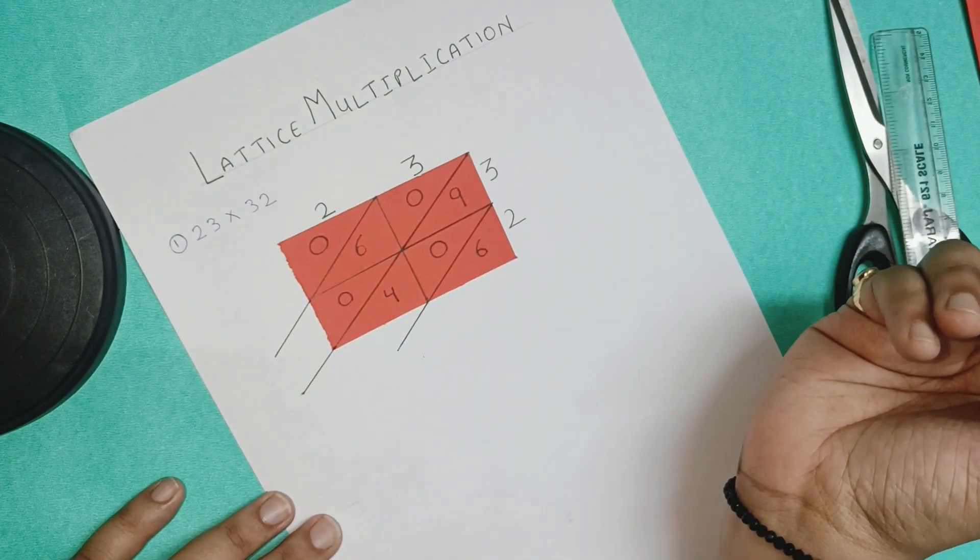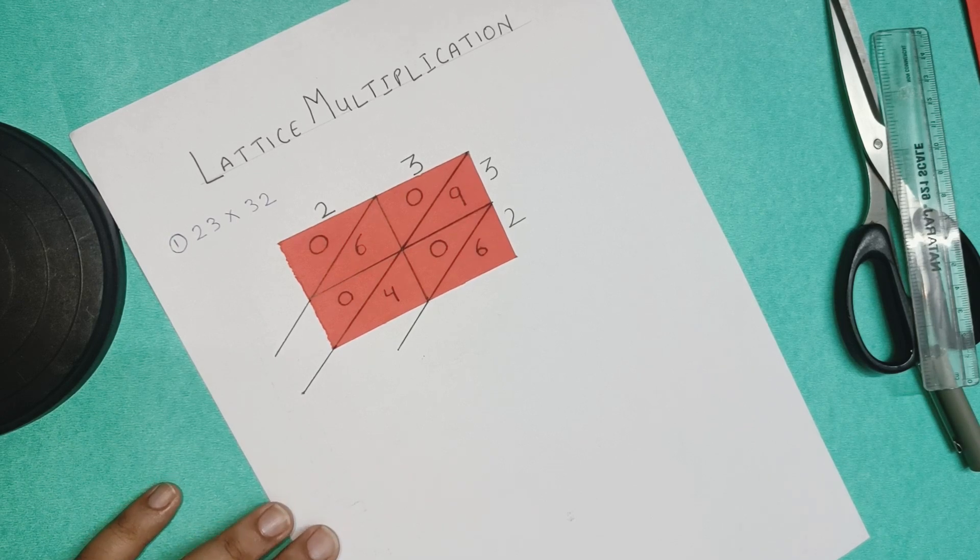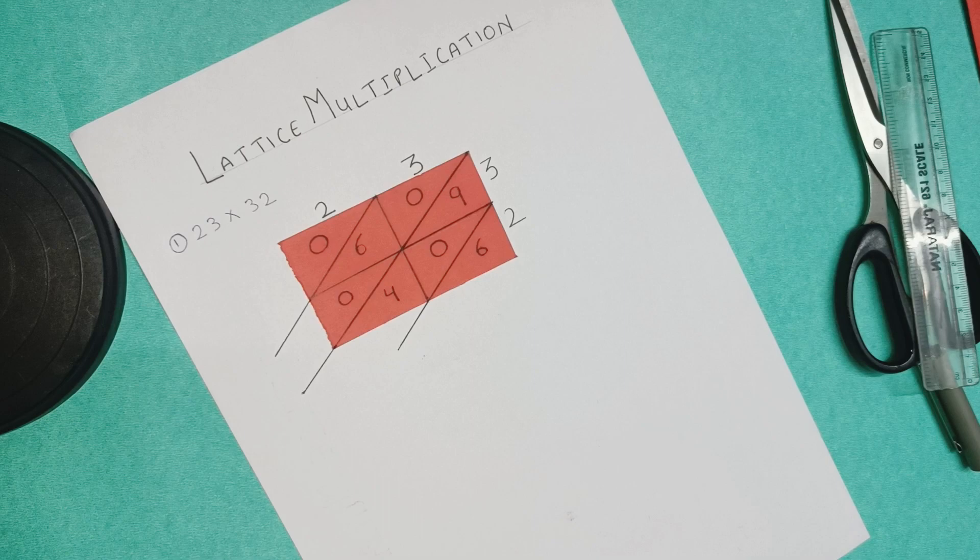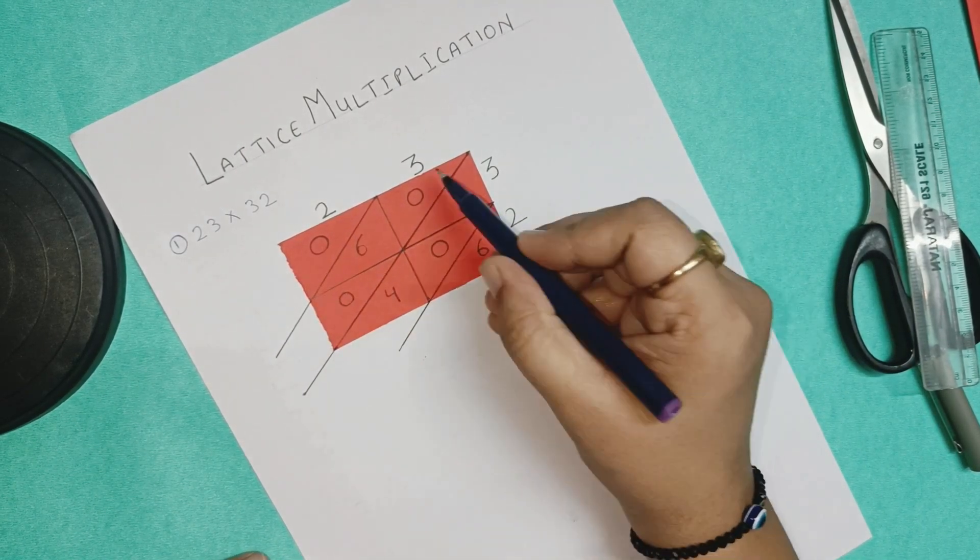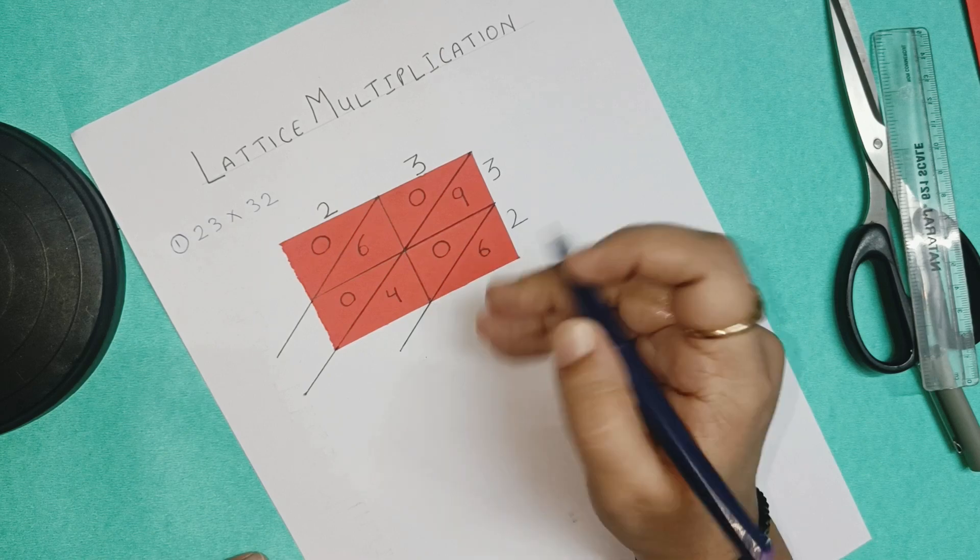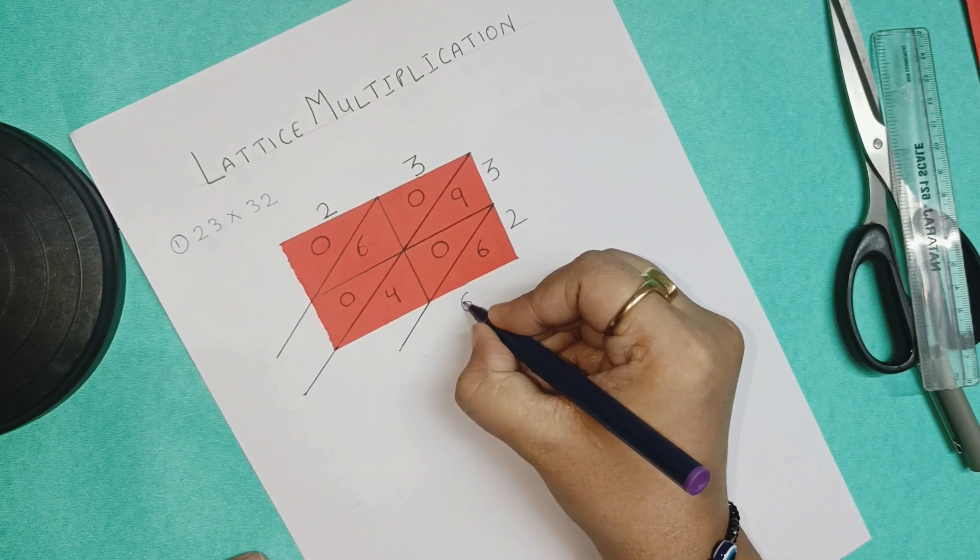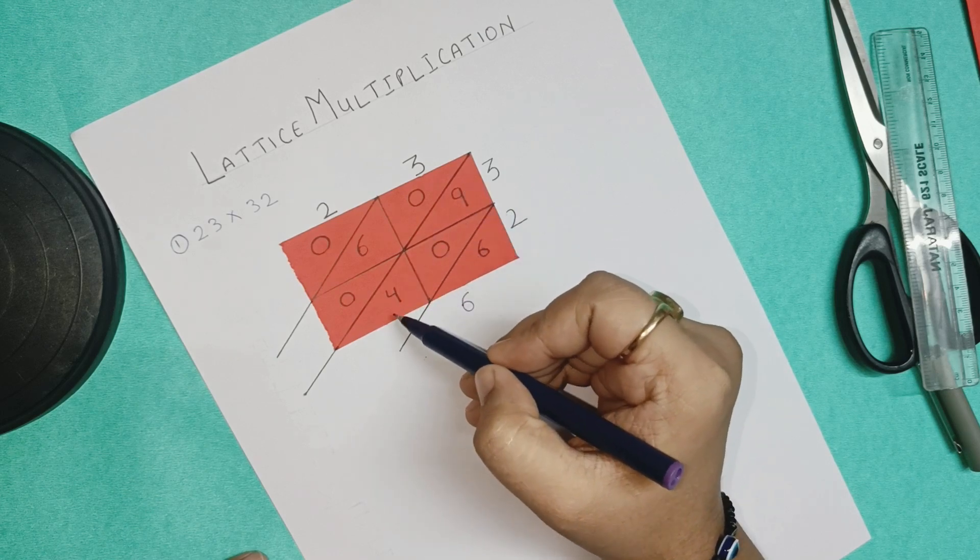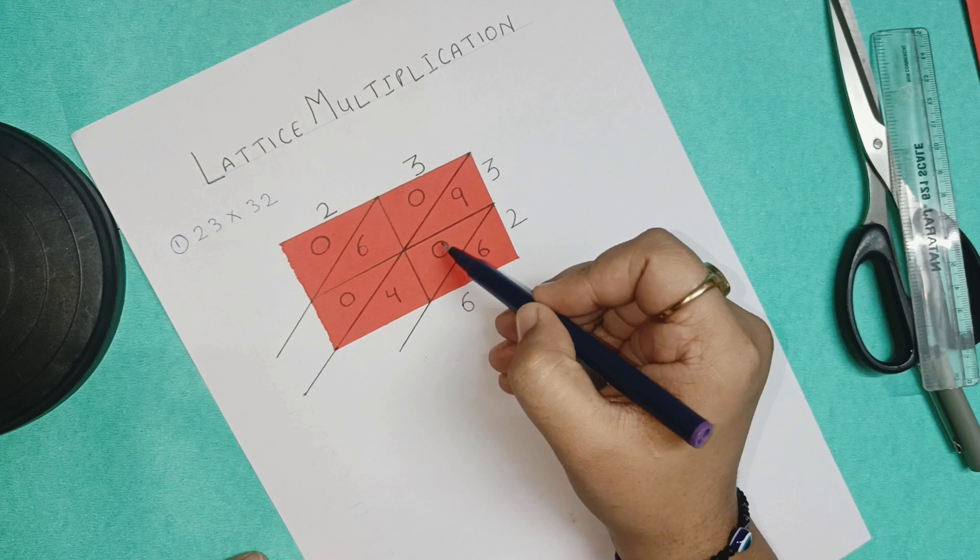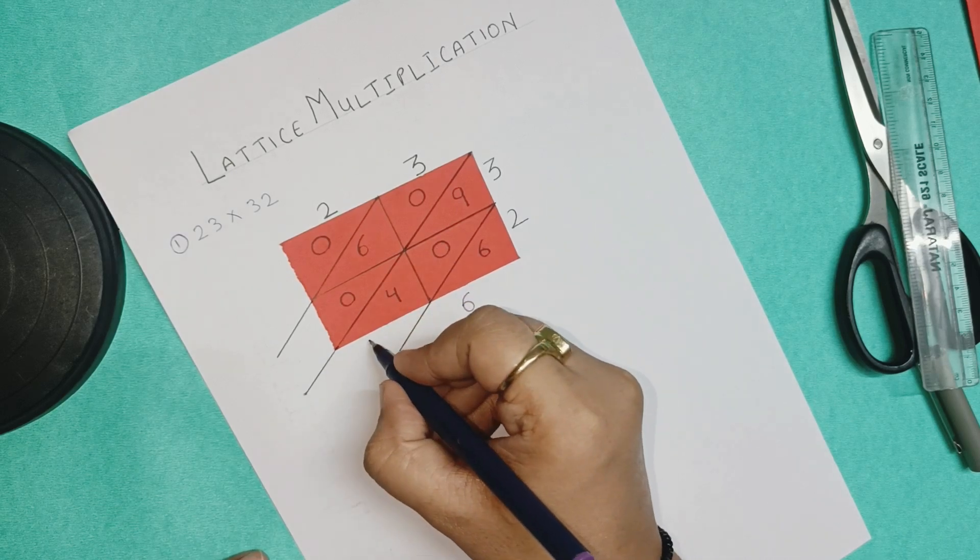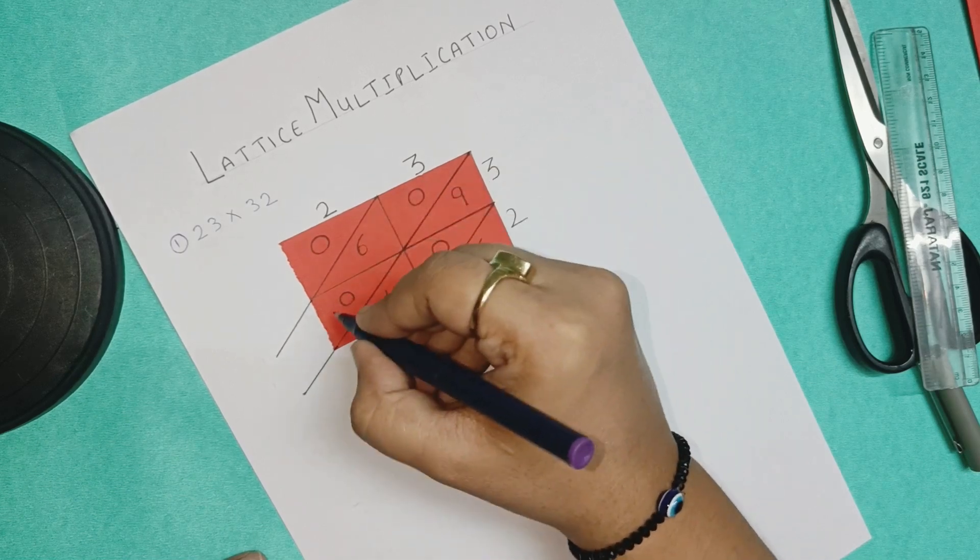Okay. Now we have to do the addition. In multiplication we do addition now at the last. So we have to do that addition now. Let us add 6. We will add 6 in this line only. Every line has the numbers that are to be added. So 6 here. And 9 plus 4. We have to write 9 plus 4 over here. 9 plus 4 plus 0 is 13. So we will write 3.